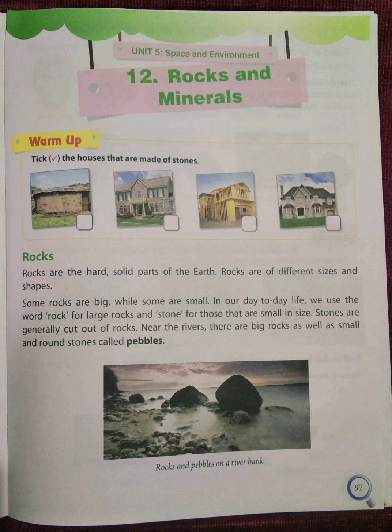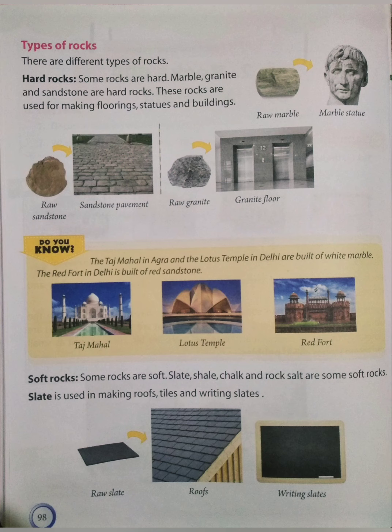Types of rocks. There are different types of rocks, that is hard rocks and soft rocks. Some examples of hard rocks are marble, granite, and sandstone. From marble we make statues. From sandstone we make pavements, and from granite we make granite floors.